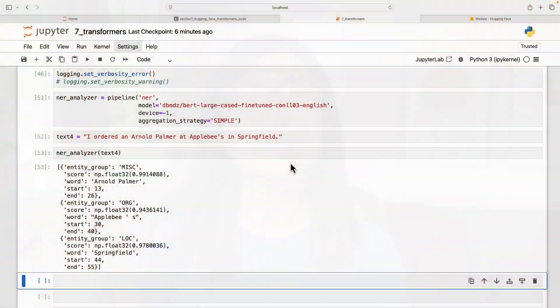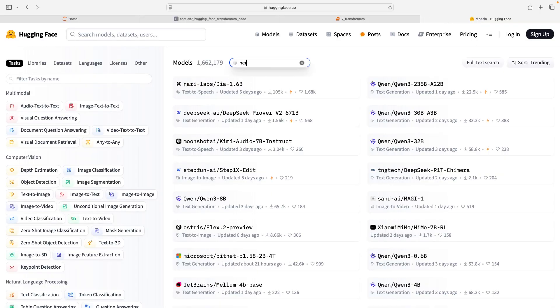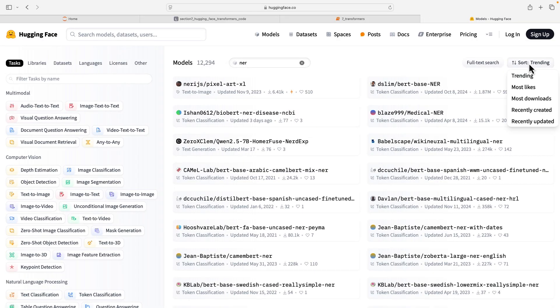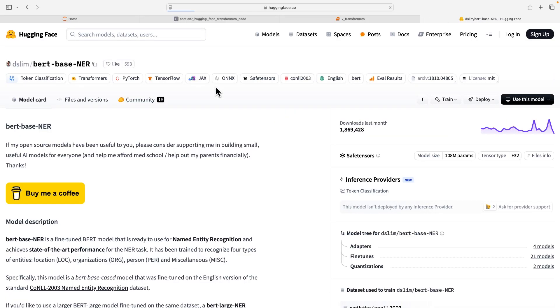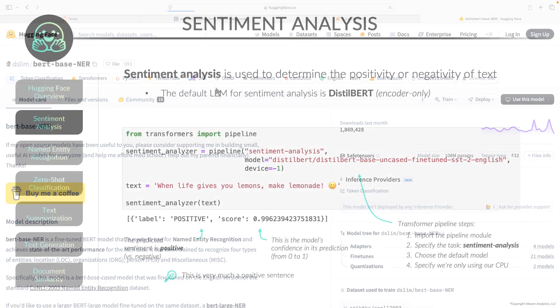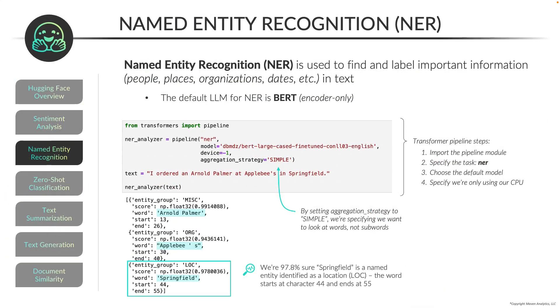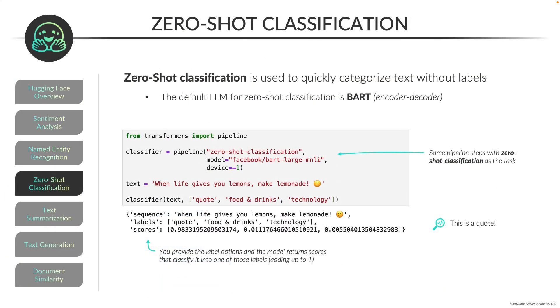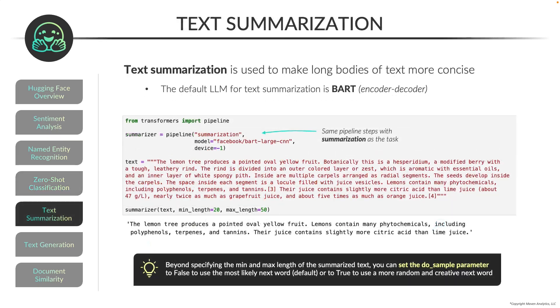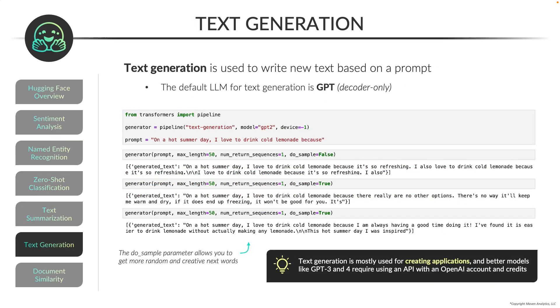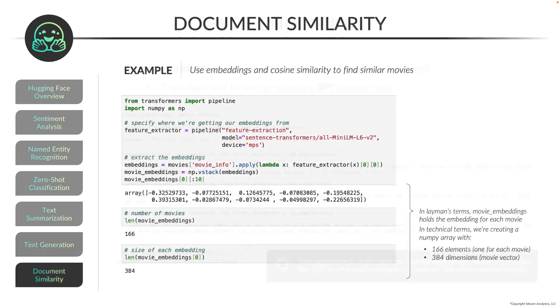Last but not least, after going through all that deep learning theory, we're going to apply what we've learned within Python. We'll be using HuggingFace's Transformers library and their model hub to demo six practical NLP applications, including sentiment analysis, named entity recognition, zero-shot classification, text summarization, text generation, and document similarity.